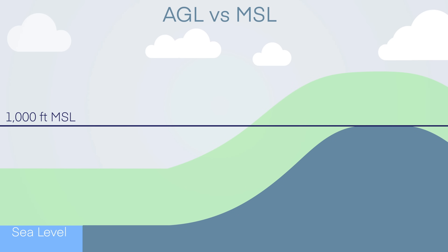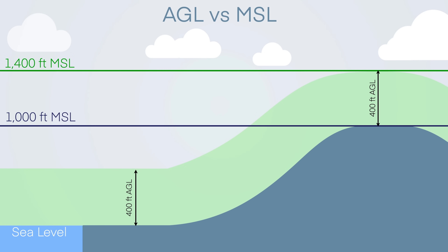Now let's take a look at the 400-foot rule. That little green area in the graph — that's how high you can fly your drone in most places. At sea level, 400 feet AGL is also 400 feet MSL because there's no difference. But on top of that thousand-foot hill, 400 feet AGL follows the contour of the terrain, and the top of that green area would be at 1,400 feet MSL. MSL versus AGL is simply a difference in reference point used to measure distance.